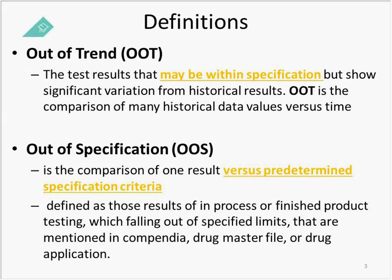On the other hand, an out-of-spec result — referred to going forward as an OOS — is very different from an out-of-trend. This is a comparison of one result versus a predetermined specification criteria. Predetermined means that it lives somewhere official. These are defined as results of in-process or finished product testing which fall outside of specified limits — limits mentioned in compendia such as USPs, your drug master file, or your drug application.